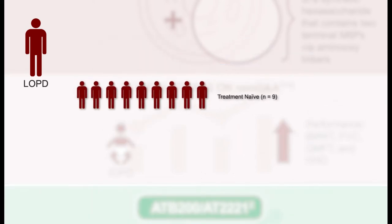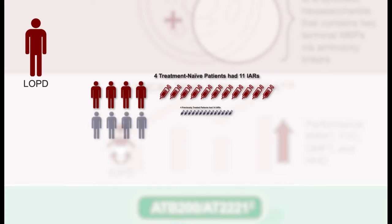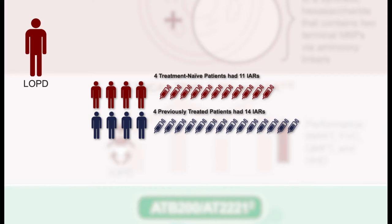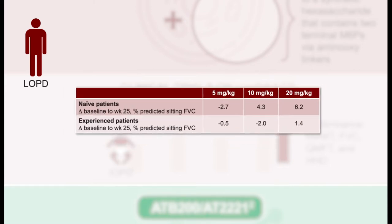The study was completed by 9 naive and 12 treatment-experienced patients. There were no deaths or life-threatening serious adverse events. One patient had an infusion-related serious adverse event. Four naive patients had 11 infusion-associated reactions, and four experienced patients had 14 infusion-associated reactions. Six-minute walk test distances increased with avalglucosidase alfa across dose groups, and functional scores such as QMFT and HHD were improved in both naive and experienced patients irrespective of dose. This was primarily a safety and pharmacokinetic study, so efficacy endpoints are exploratory.